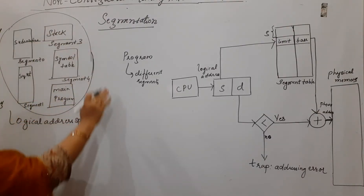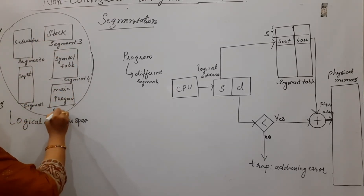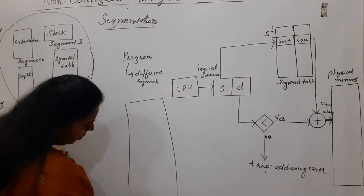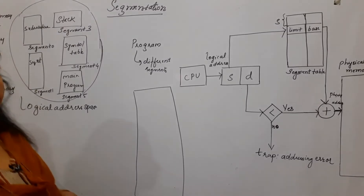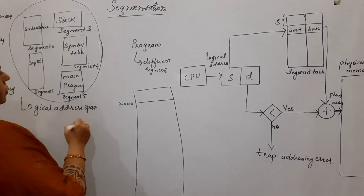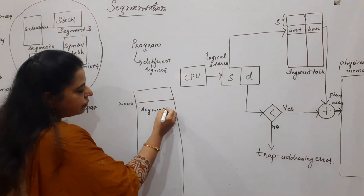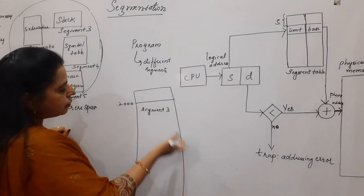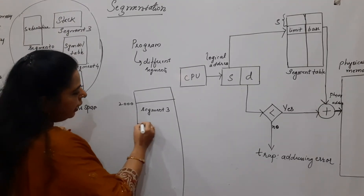Let us take an example. This particular program has five segments. All five segments are stored in the main memory. As and when space is available in the main memory, a segment is allocated there. For example, segment three starts from address 2000 and ends at 2500, because segment one and segment two were placed earlier, and when this memory space became available, segment three was placed there.